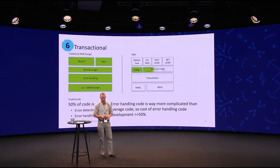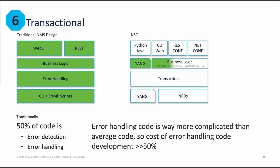Cornerstone number six is being transactional. If you look at a traditional NMS design, you have to build all the pieces yourself. On top, you have the user interface and APIs — a web UI, maybe a REST interface. Then a layer of business logic below that understands the service you are going to provision. Under that, there's usually a layer of error handling. And below the error handling, you have the actual device-touching templates or scripts pushing the business logic idea to all the devices that need to participate. This is a traditional design.